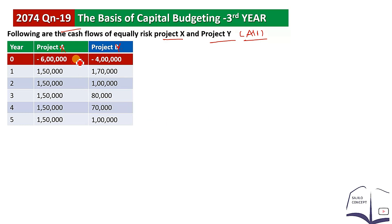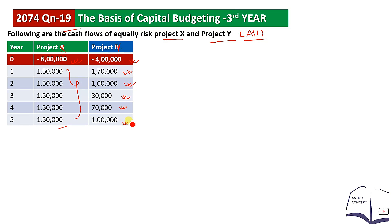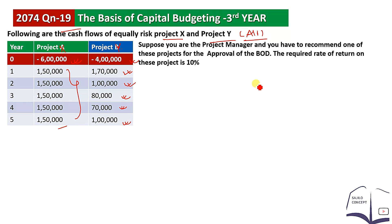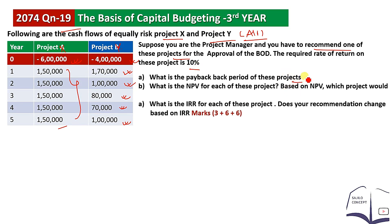Project X has an initial investment of 6,000,000 rupees. Project Y has an initial investment of 4,000,000 rupees. As a project manager, we need to recommend one of the projects. As a board of directors, the required rate of return is 10%. We need to calculate the payback period, net present value (NPV), and internal rate of return (IRR).